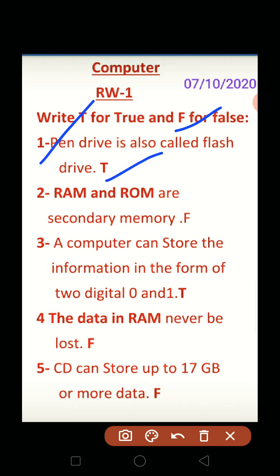True. Second: RAM and ROM are secondary memory. False — these are primary memory. Third: a computer can store information in the form of 2 digits, 0 and 1. True.